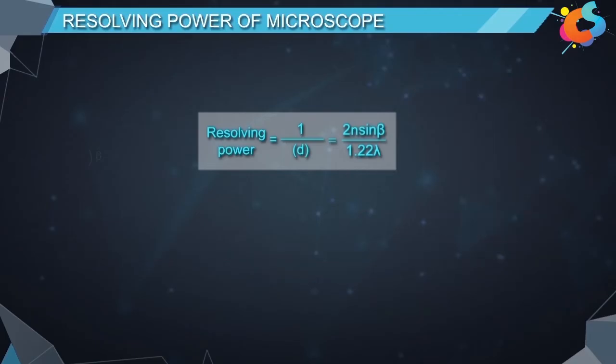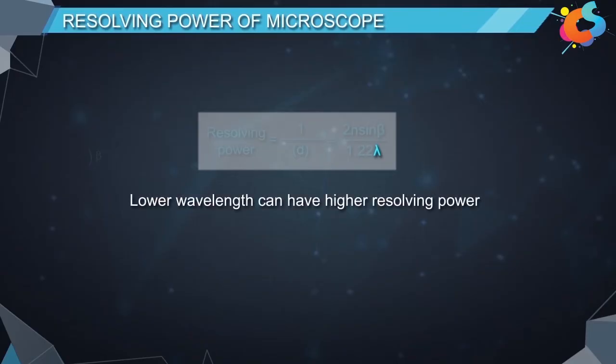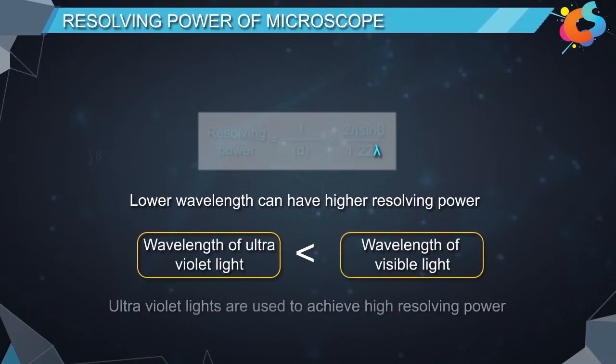Again, since resolving power is varying inversely with the wavelength lambda, we can say that the light of lower wavelength can have higher resolving power. Since wavelength of ultraviolet light is less than the visible light, ultraviolet light is used to achieve high resolving power.